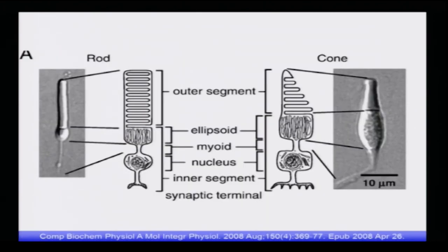This is how a rod and a cone physically look like — these are from the fish retina. The reference is in Comparative Biochemistry and Physiology, Part A, Molecular and Integrative Physiology, August 2008, Volume 158, Issue 4. Please go through it if you are interested to see how they look and how they are isolated from fish retina.